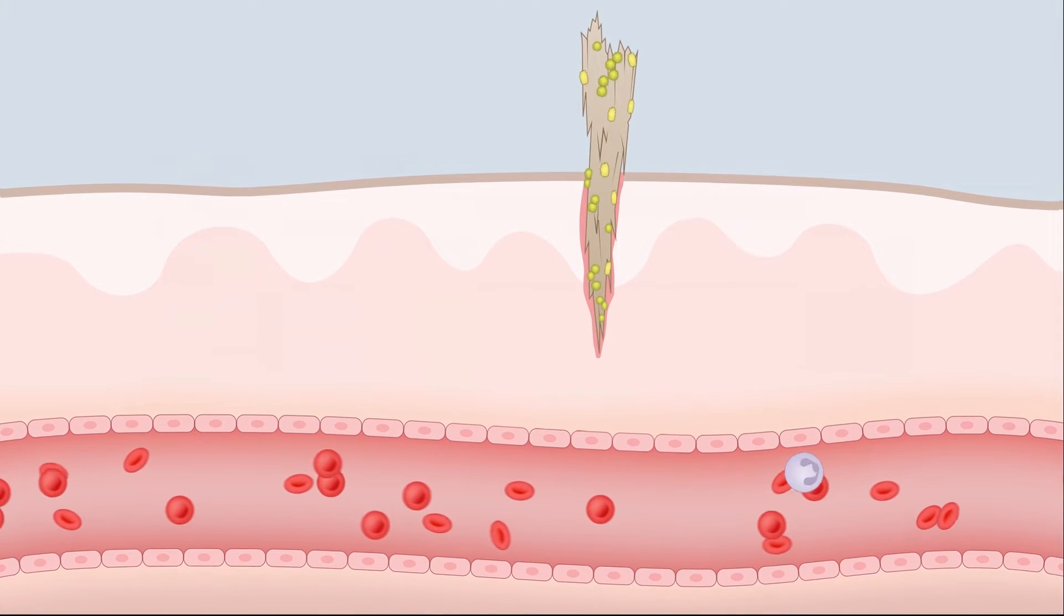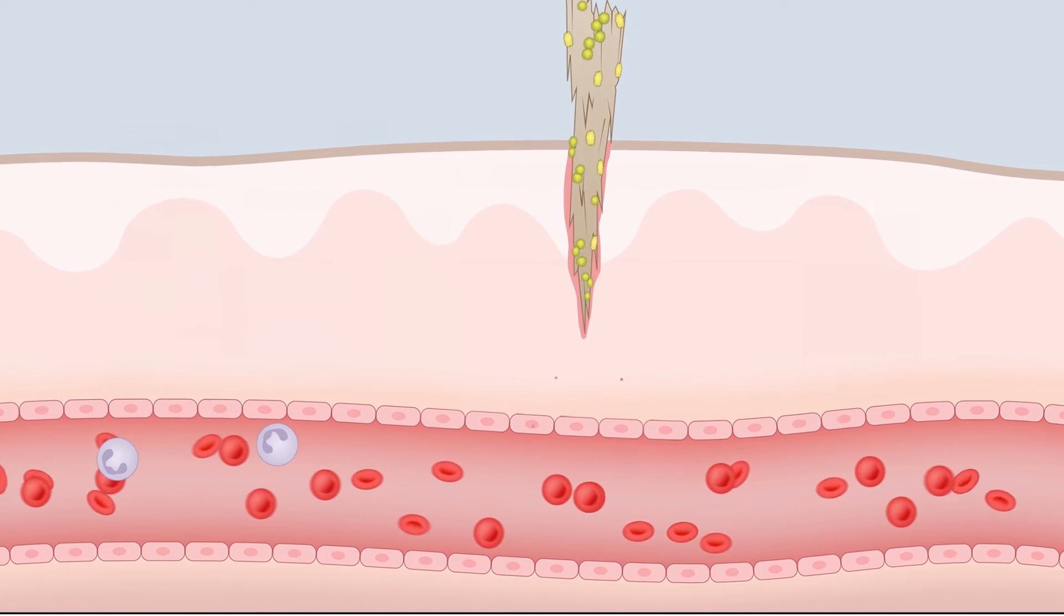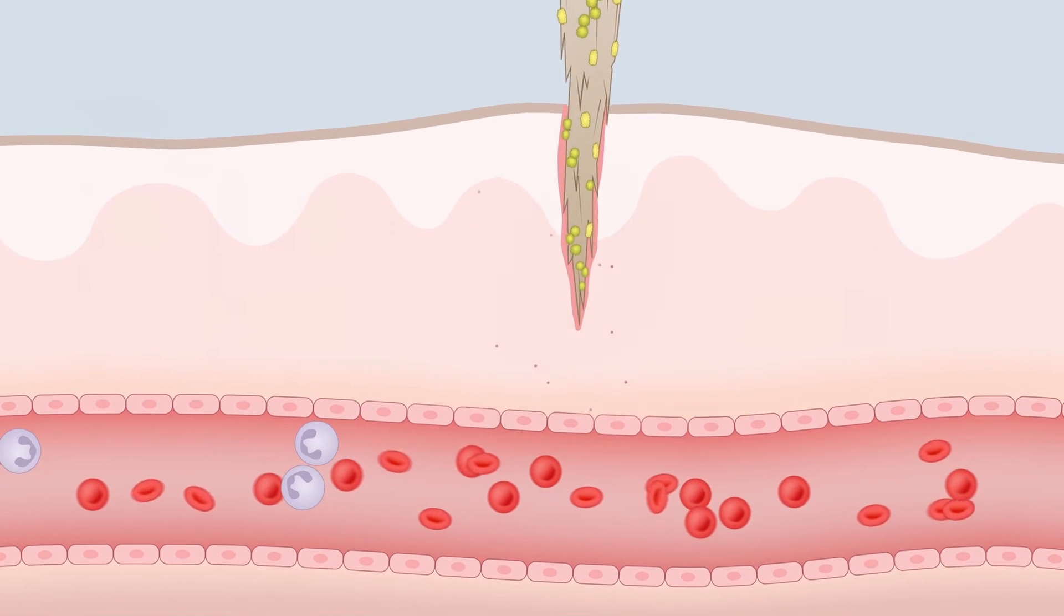First, the cells involved in innate immunity become active. Certain stimuli, such as tissue injury, trigger an inflammatory reaction.